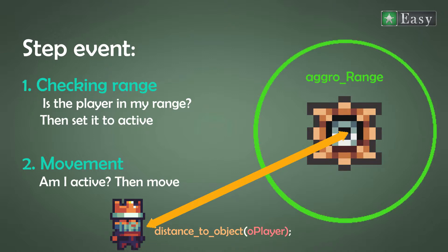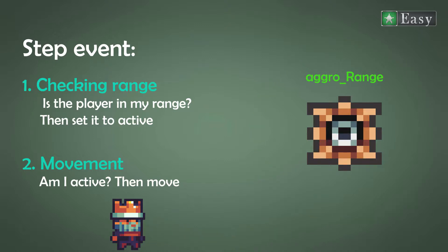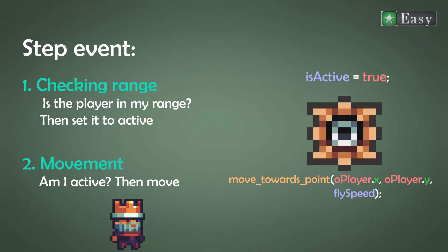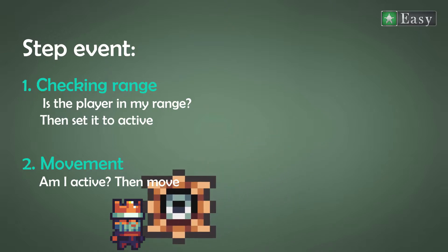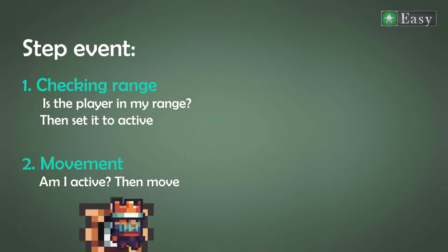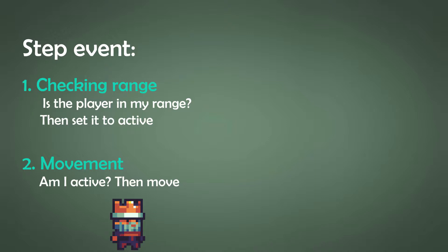Now we want it to move towards the player, so we check if the flying enemy is active. If it is active, we use the move_towards_point function, which demands an X and a Y point to fly to and how fast — which we defined at the start with fly speed. One thing we have to take into account is that the move_towards_point function does its job even when the enemy is docile, slash isActive set to false.